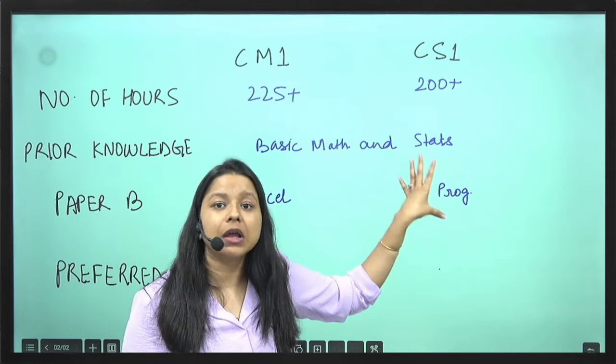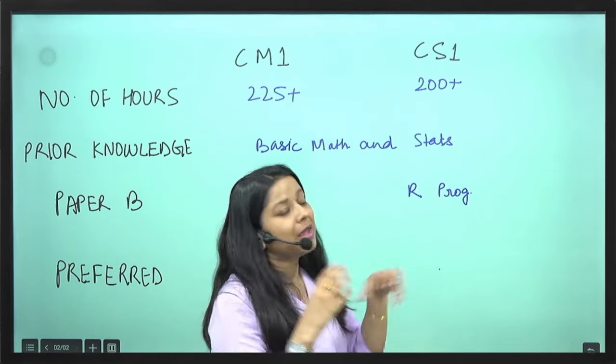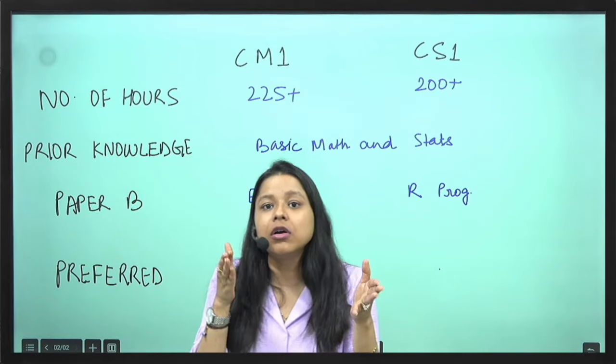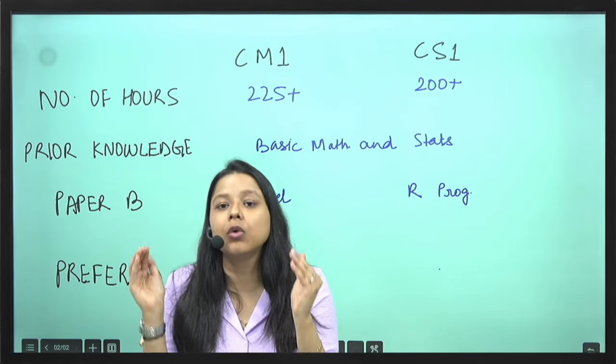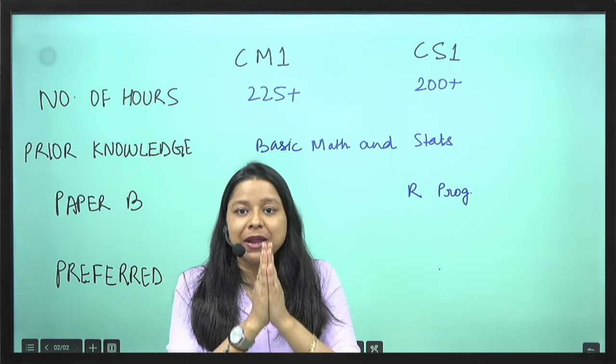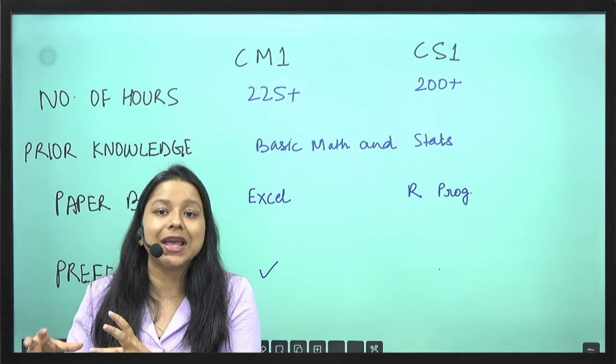Now the same R programming knowledge is required in your paper CS2. R programming is a software which you generally tend to forget if you have a gap of somewhere around 6 months. So it's preferred that CM1, CS1, and then just after CS1 you are appearing for a paper like CS2.